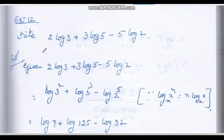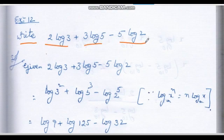This is the problem: Write 2 log 3 plus 3 log 5 minus 5 log 2 in simple form, that is in single form.